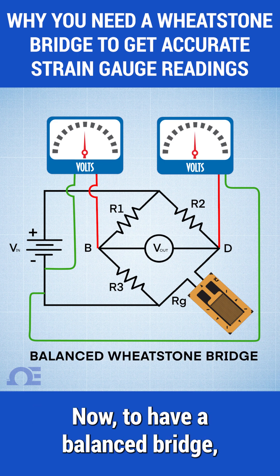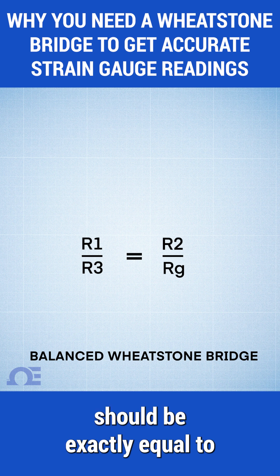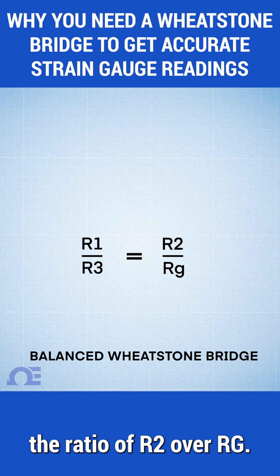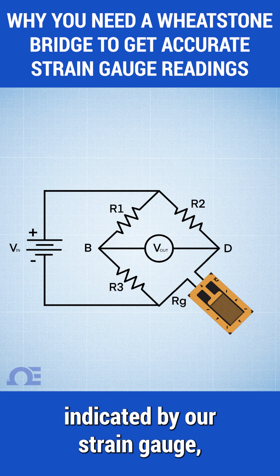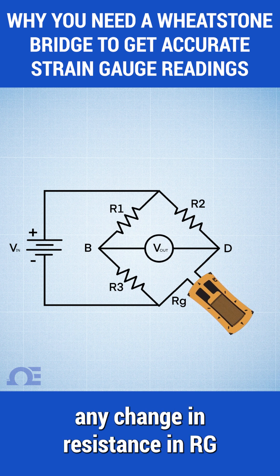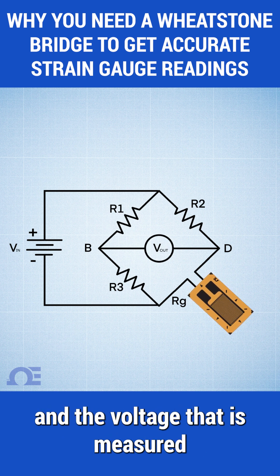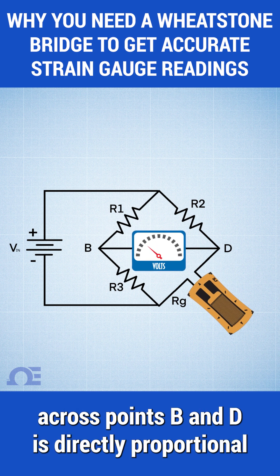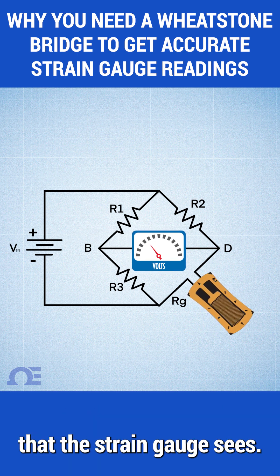To have a balanced bridge, the ratio of R1 over R3 should be exactly equal to the ratio of R2 over RG. Since RG is your variable resistor indicated by your strain gauge, any change in resistance in RG will throw the bridge out of balance, and the voltage measured across points B and D is directly proportional to the change in resistance that the strain gauge sees.